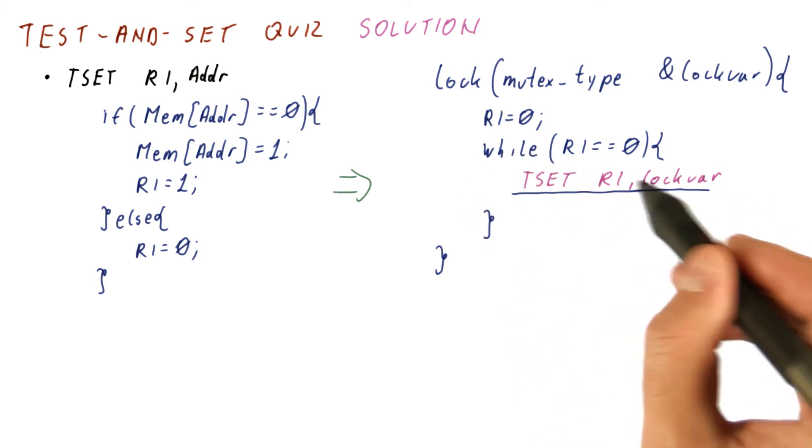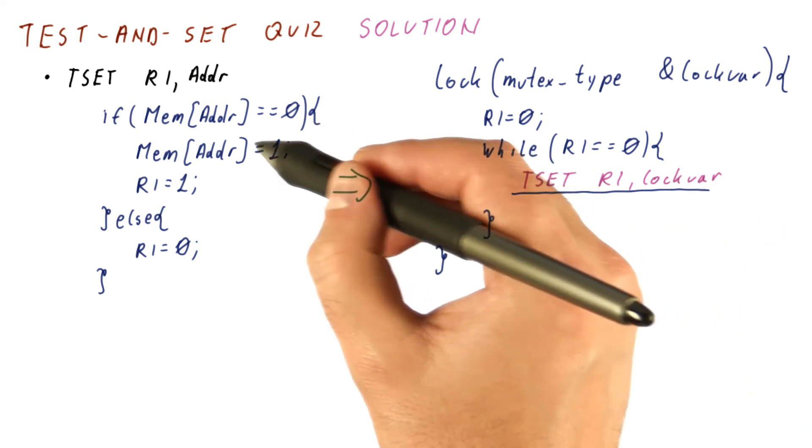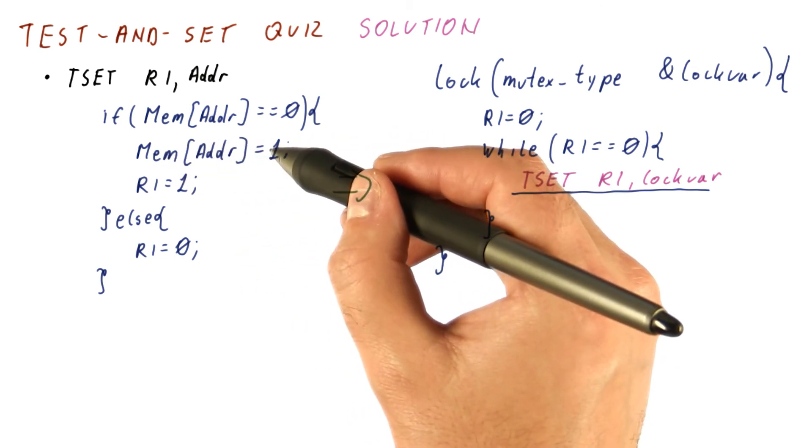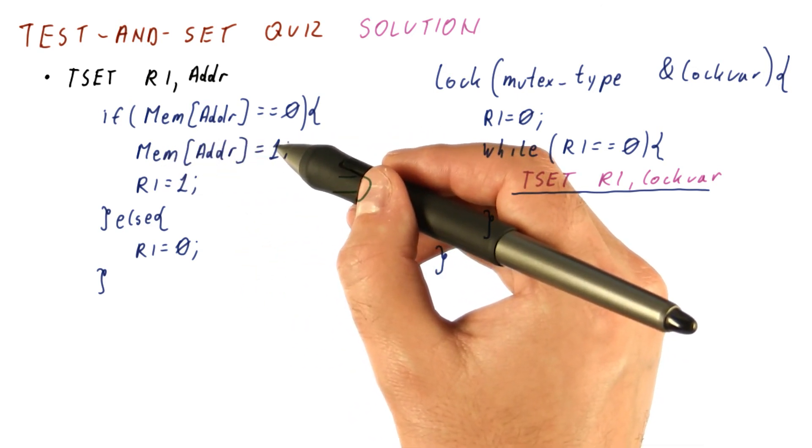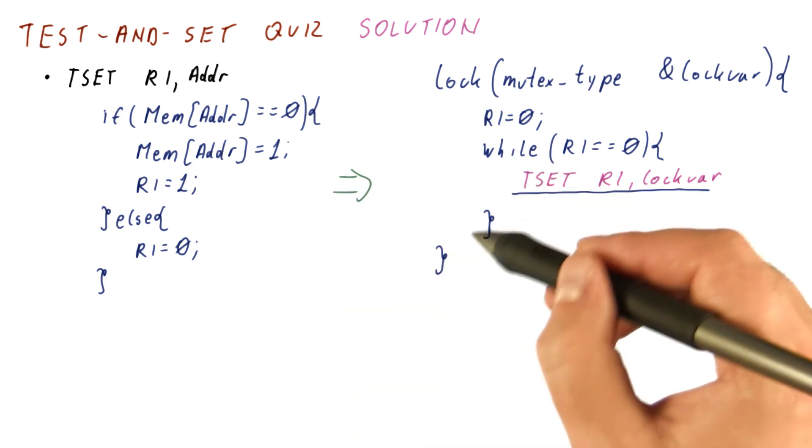If, however, the test and set finds the lockvar to be free, that means its memory location is 0, then we do this. We set lockvar to 1, thus changing the state of the lock to locked, and we return 1 in R1 so that this loop will exit.